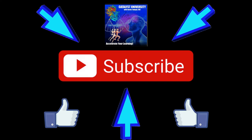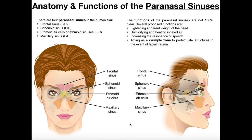Welcome back to Anatomy and Physiology on Catalyst University. My name is Kevin Tokoff. Please make sure to like this video and subscribe to my channel for future videos and notifications. In this video, we're going to discuss the anatomy and functions of what are called the paranasal sinuses. Most of the time you'll just hear these referred to as the sinuses, but paranasal sinuses are the correct term — paranasal meaning that they're surrounding the nose.